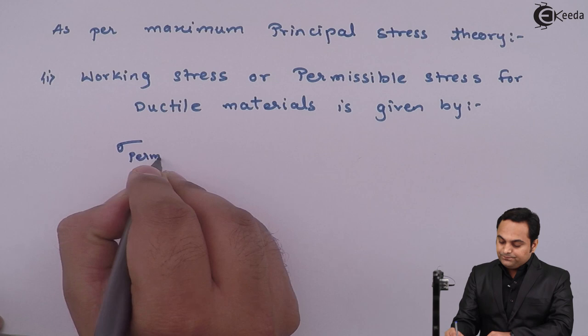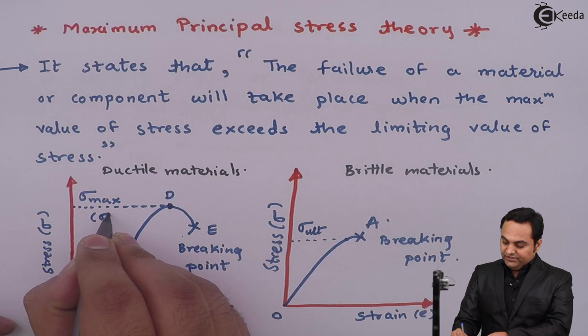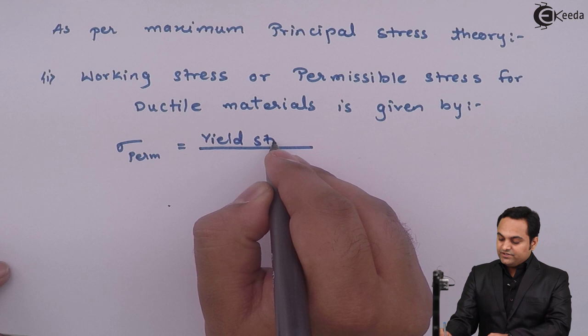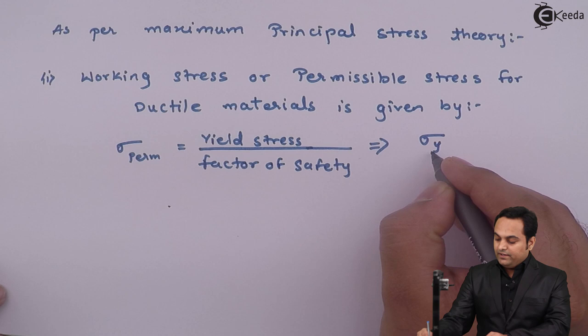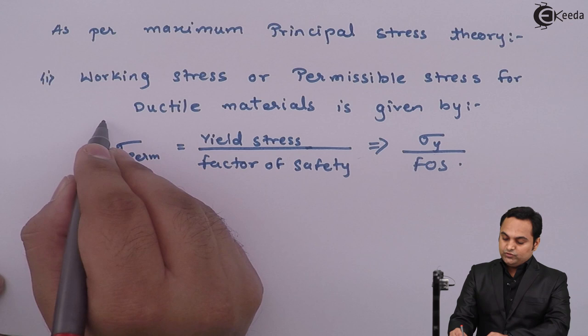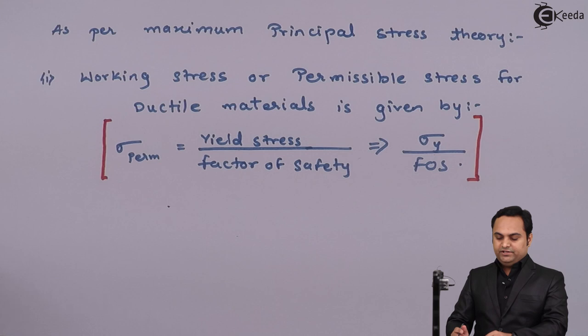The permissible stress, sigma permissible, will be equal to — since we are writing for ductile materials, in case of ductile materials the maximum stress is also called yield stress, sigma_y. So the permissible stress equals yield stress upon factor of safety: sigma_y / FOS. Using this relation, we can reduce the value of working stress and avoid the failure of that material.